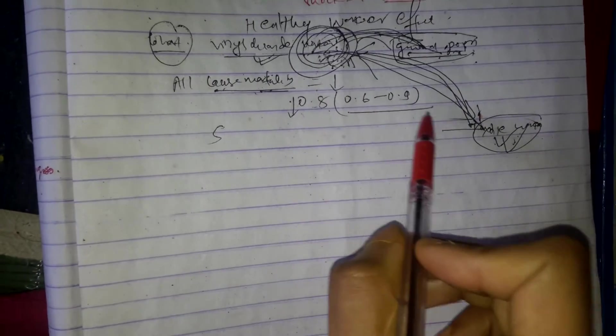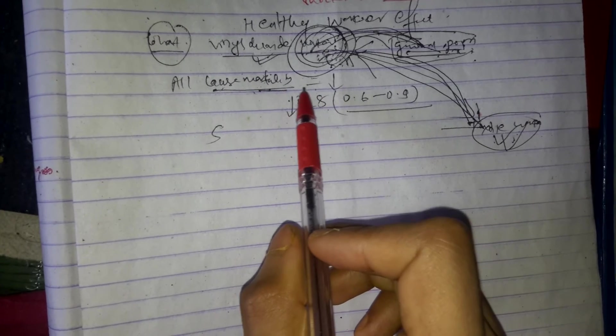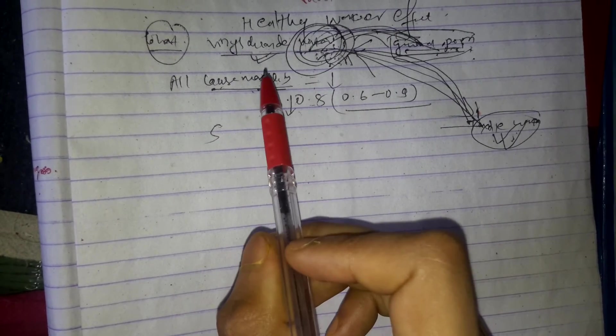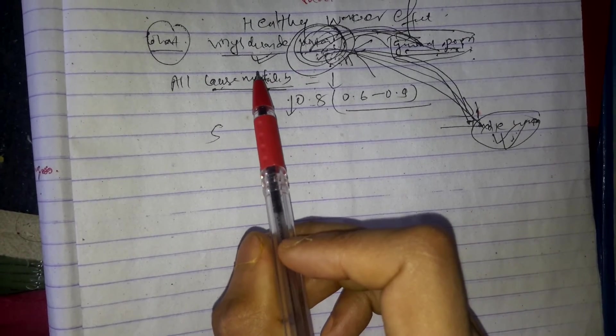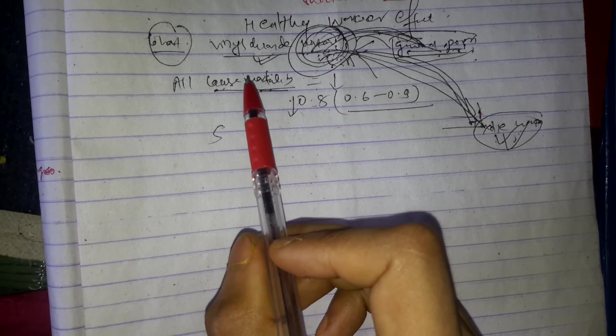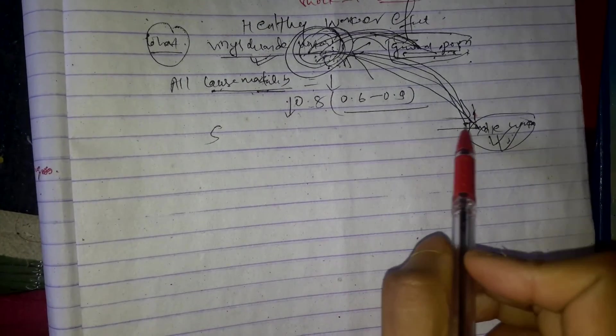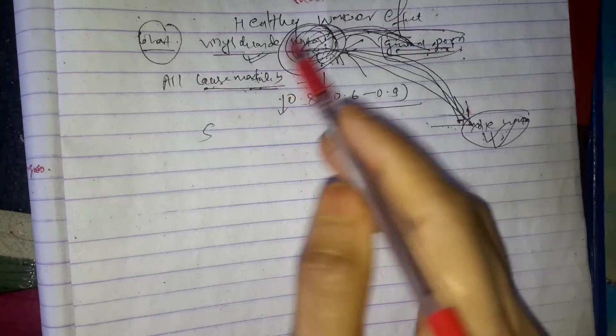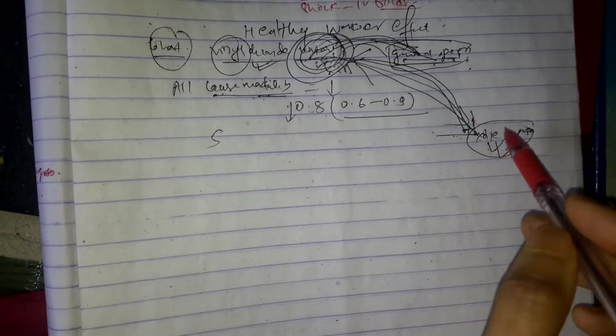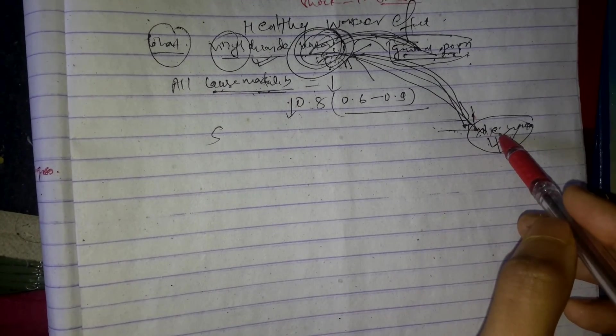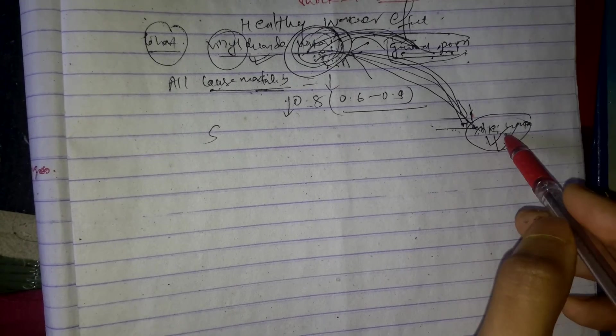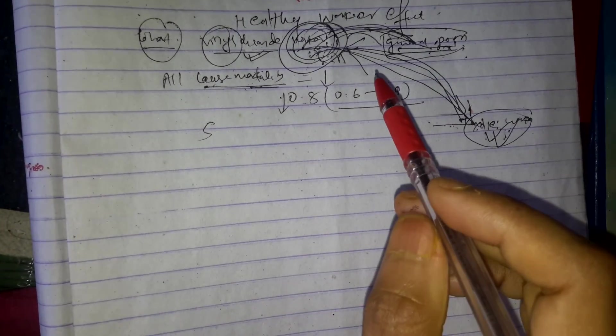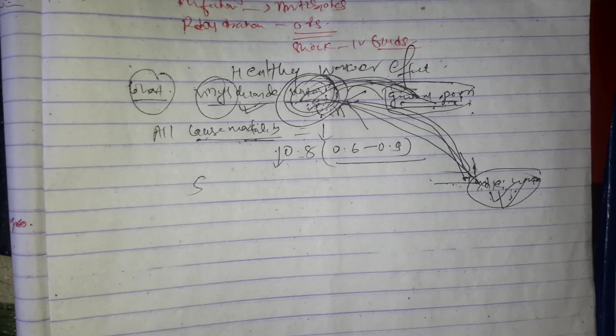Employing a cohort of workers unexposed to the risk factor of interest as the population of reference reduces the bias introduced by healthy worker effect.